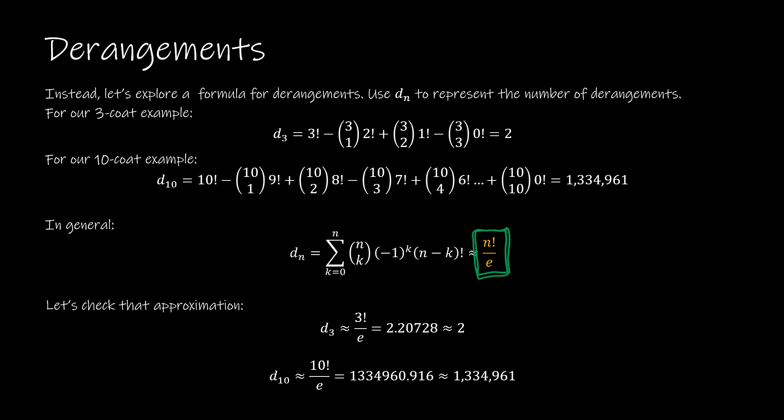So instead of having to do all of that work, someone has discovered, and I don't know who that was, and honestly I don't care, I'm just glad they did. In general, we can take n factorial divided by e. So e is that irrational number on your calculator.